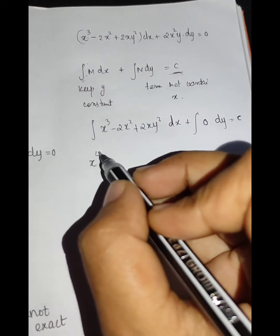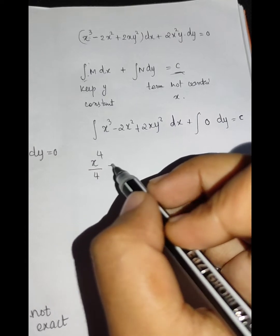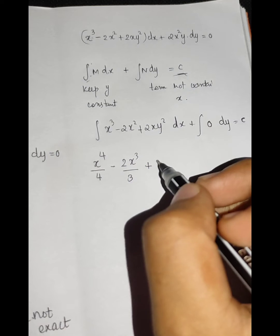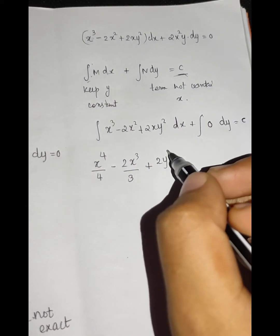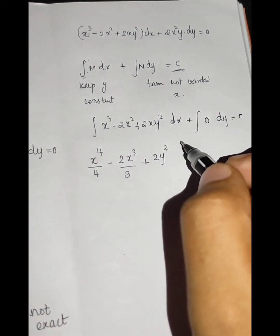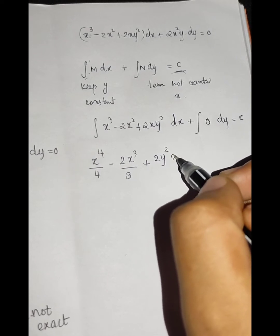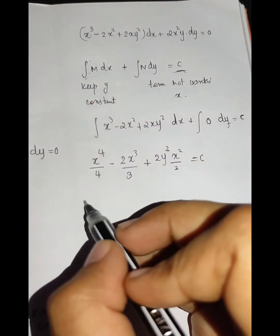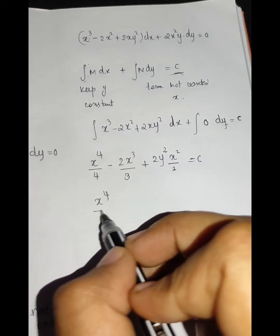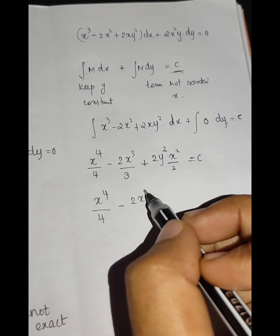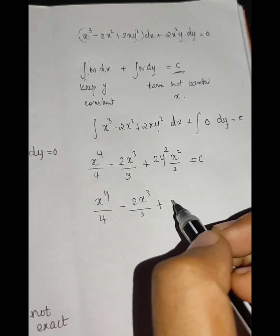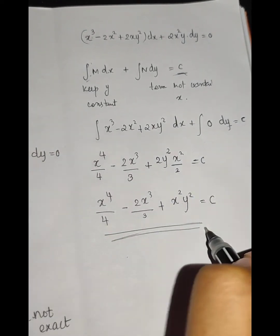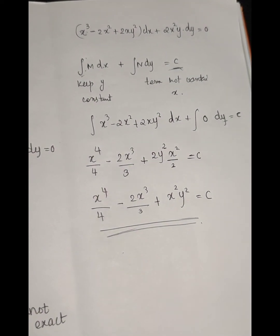Integrating gives x⁴/4 minus 2x³/3 plus x²y² equals c. This is the solution and it is easy to answer questions like that.